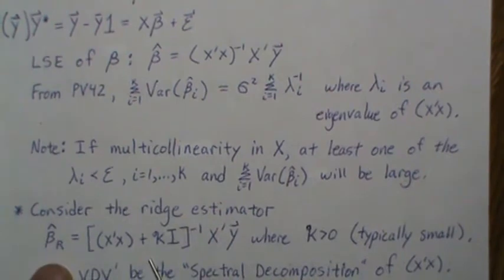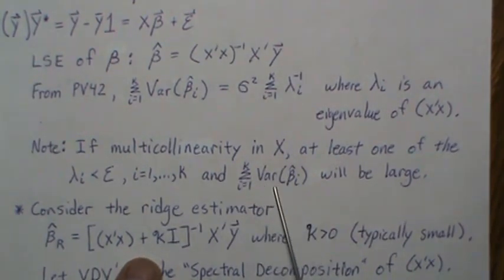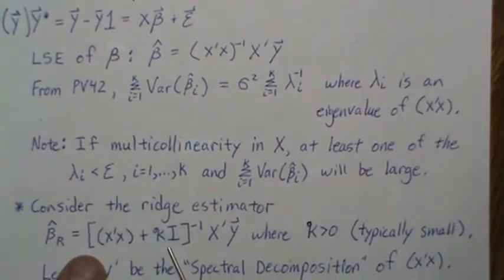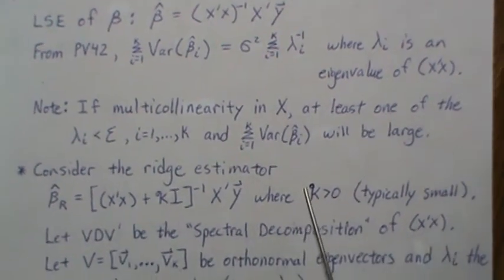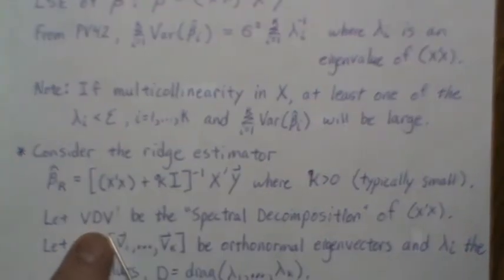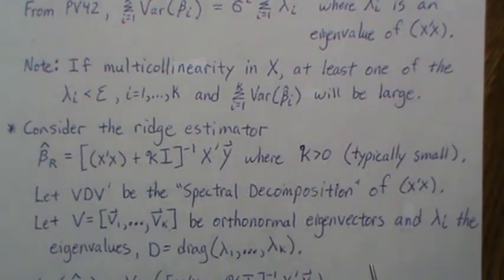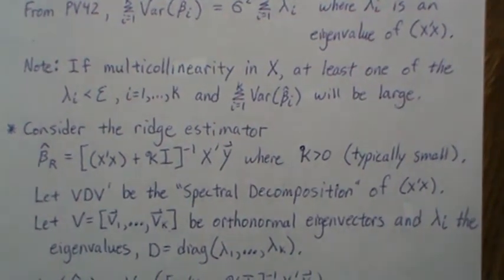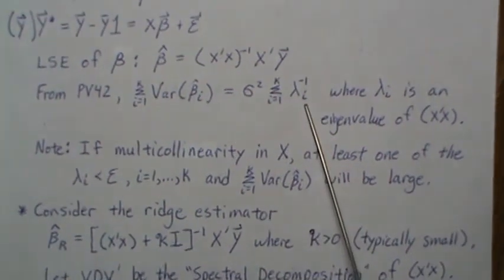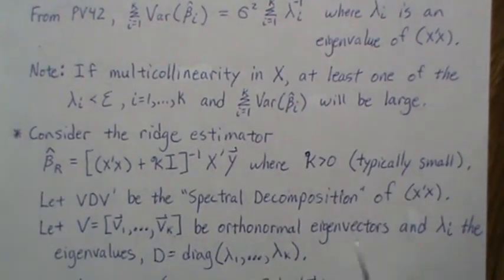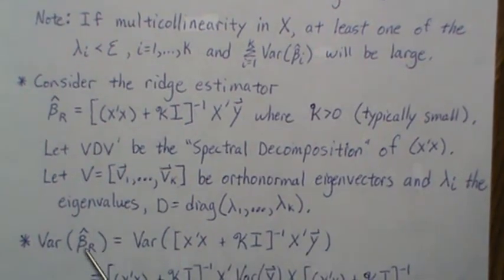Now let's study the properties of this. When there's multicollinearity the total variance can be quite large, so adding this shrinkage parameter should reduce that total variance — and the answer is yes. To develop this we need the spectral decomposition of X-transpose X, where V contains the orthonormal eigenvectors and the eigenvalues lambda-i are arranged in a diagonal matrix D.